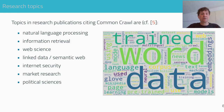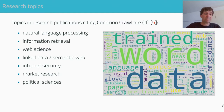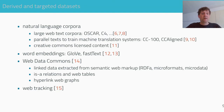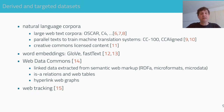Topics in research publications citing CommonCrawl are natural language processing — this makes up about 90% of the research, as can be seen by this word cloud from publication titles and snippets. Other covered topics are information retrieval, web data, semantic web, internet security, and more occasionally market research or political sciences. The most valuable user contributions are data sets extracted or derived from CommonCrawl and targeted to a specific use case or user group. These include natural language corpora, large web text corpora, parallel texts to train machine translation systems, collections of Creative Commons licensed content, language models such as word embeddings, linked data extracted from semantic web markup, entity relations and web tables, hyperlinked web graphs, and a dataset measuring tracking activities.